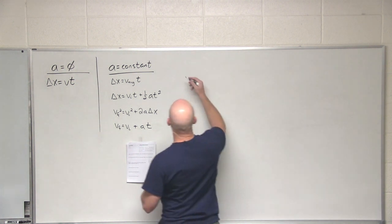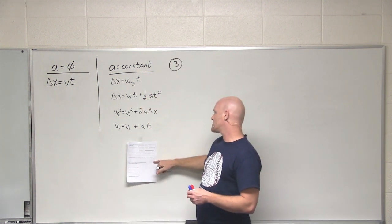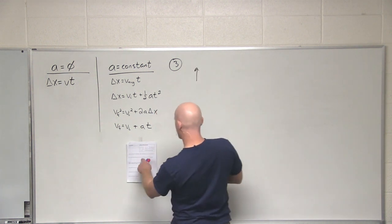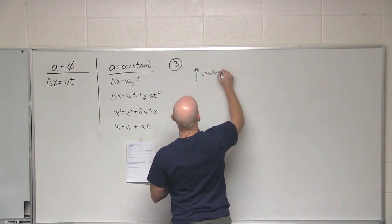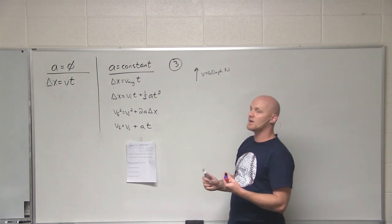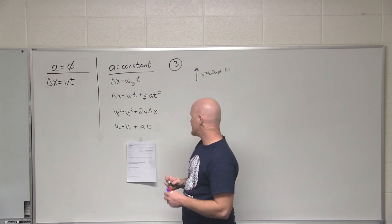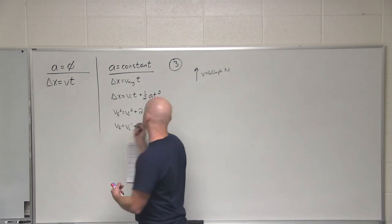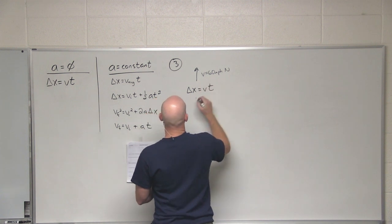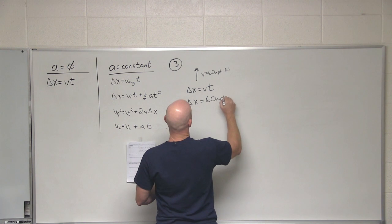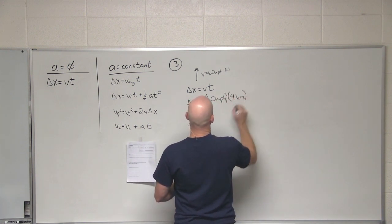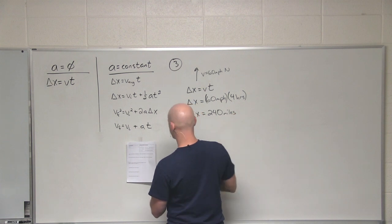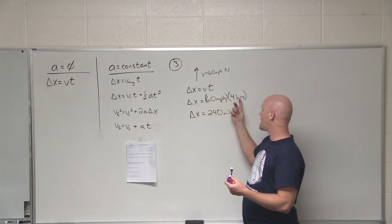Let's look at some calculations. Number three says a car travels due north for four hours with a constant speed of 60 miles per hour. I've given you a speed, but I've also told you it's due north — both magnitude and direction, that's a velocity, it's a vector. What is the total displacement? Is there acceleration? No, because we're traveling at constant speed. If there's no acceleration, that's our only equation. Displacement equals velocity times time: 60 miles per hour times four hours equals 240 miles.